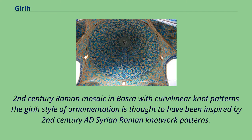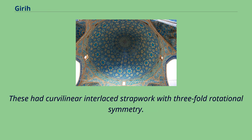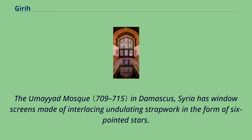The girih style of ornamentation is thought to have been inspired by 2nd century AD Syrian Roman knotwork patterns, which had curvilinear interlaced strapwork with threefold rotational symmetry. The Umayyad Mosque in Damascus, Syria, has window screens made of interlacing undulating strapwork in the form of six-pointed stars.